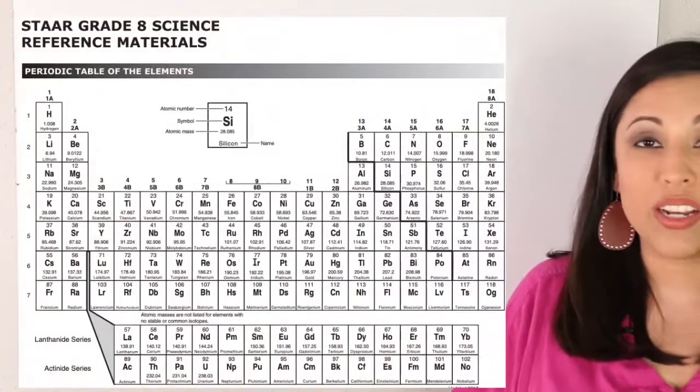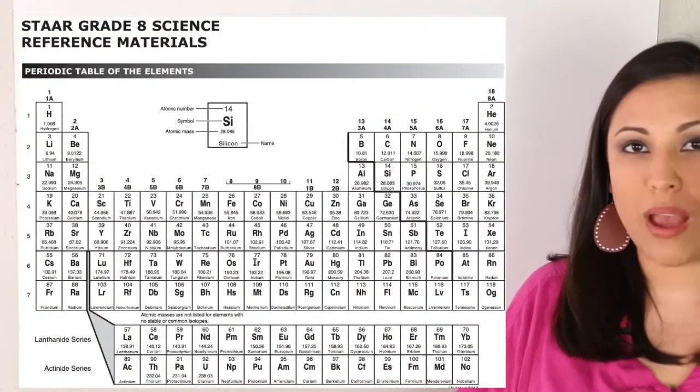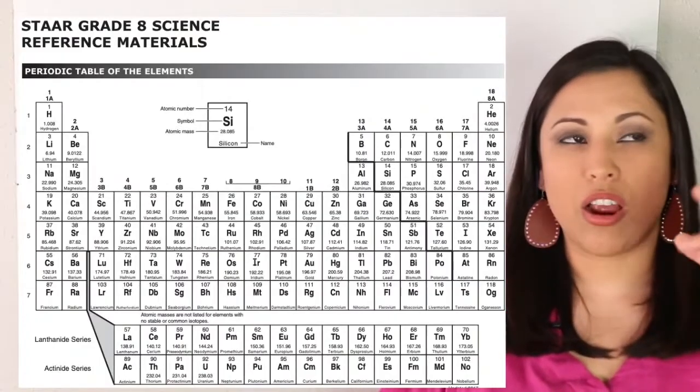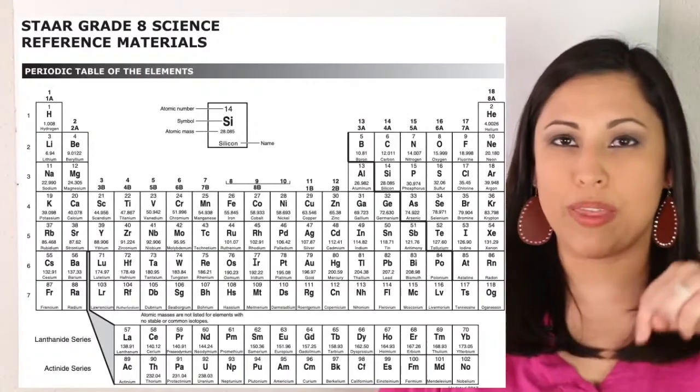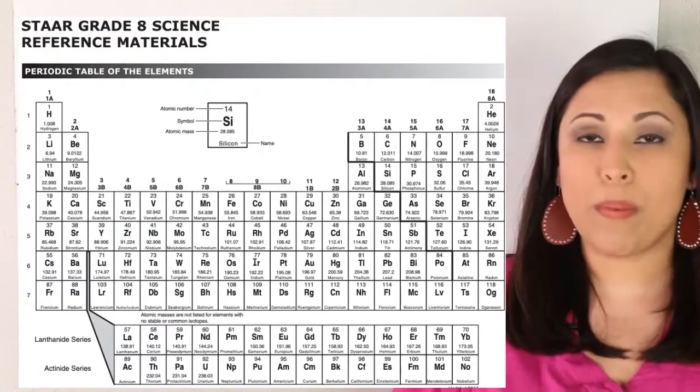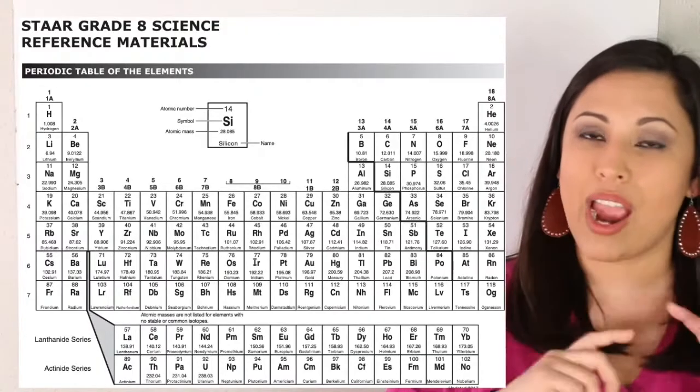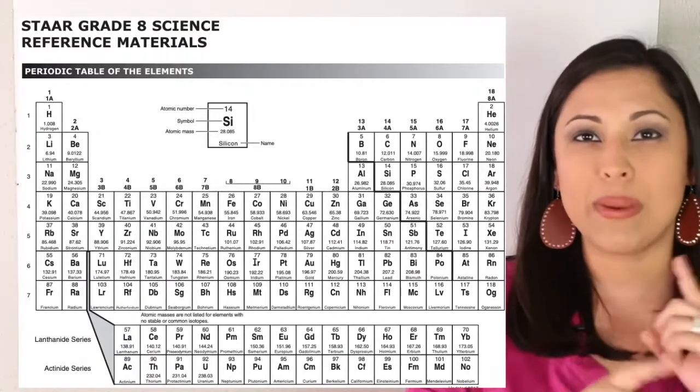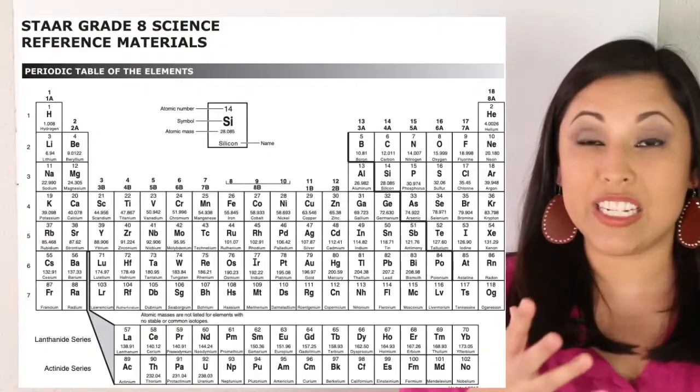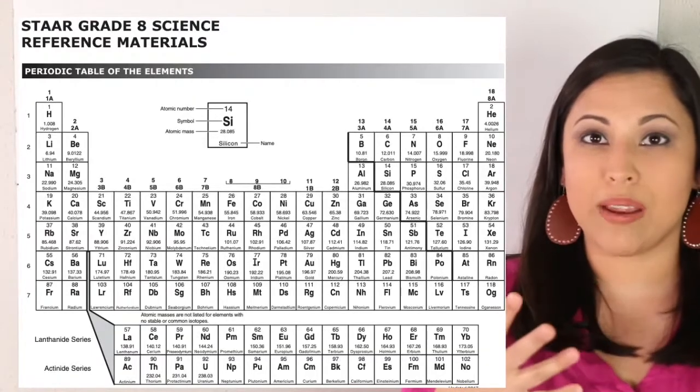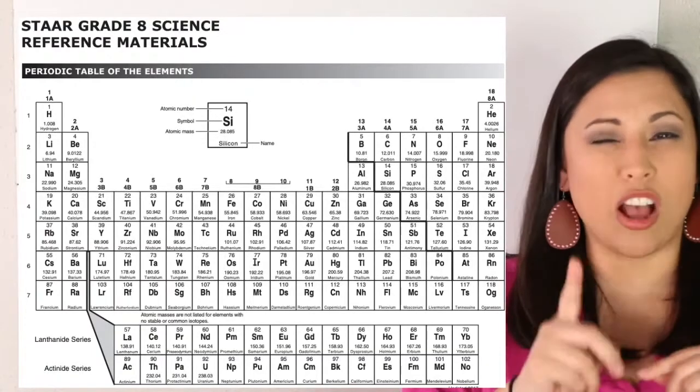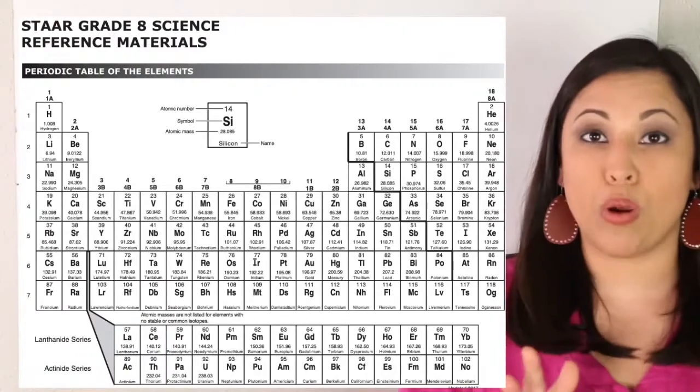So if you recall, we can use our periodic table of elements to find our atomic number, which is the number at the top, and our atomic mass, which is the number at the bottom. Remember, our atomic number is like our ID number. Every time the atomic number changes, the ID changes or changes to a new atom. So our atomic number is also equal to our number of protons.